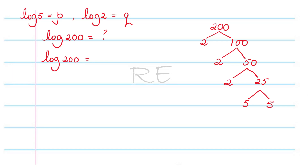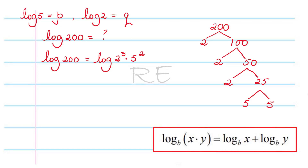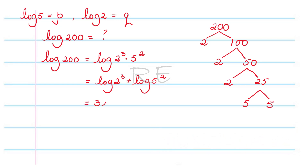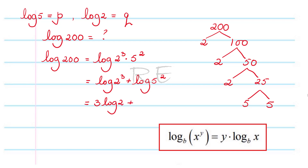Log of 200 is equal to log of 2 cubed times 5 squared. Using the product rule, that equals log of 2 cubed plus log of 5 squared. Then applying the power rule: log of 2 cubed is 3 log of 2, and log of 5 squared is 2 times log of 5.